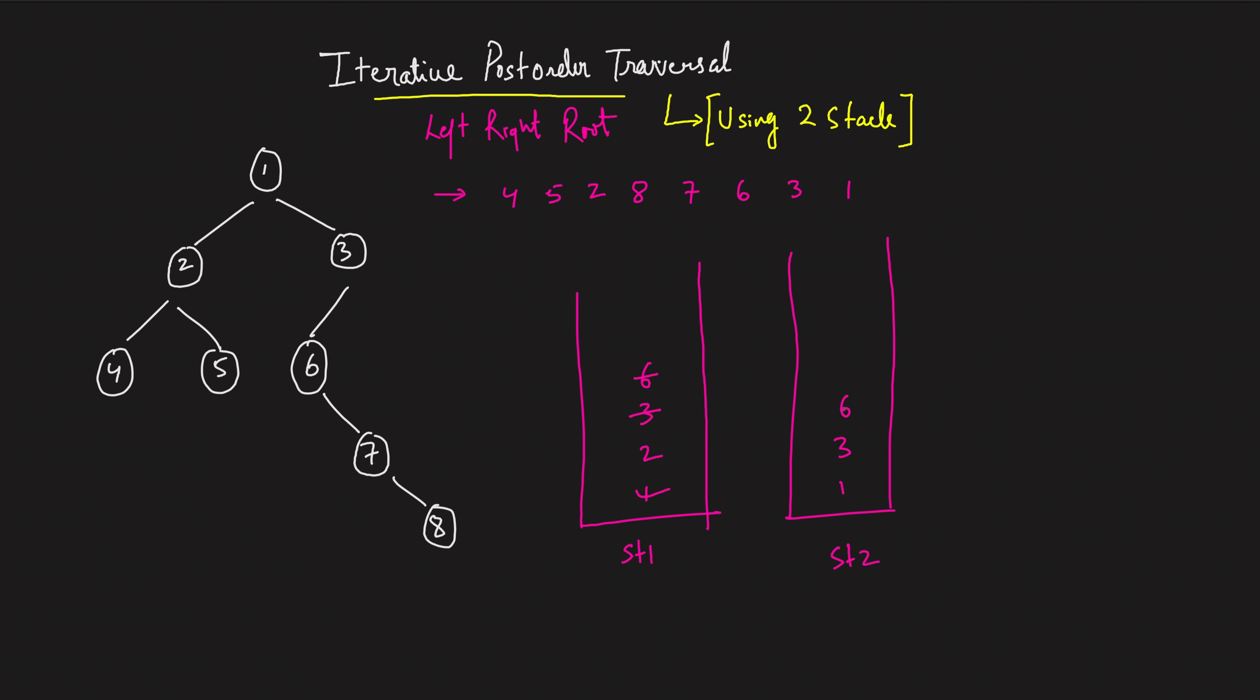Now again, come back on the next iteration, take whatever is at the top, put it onto your stack. So I put that into your other stack. Next, whatever you have taken, if there is a left of six, take it, if there is a right of six, take it and put it into your stack. Perfect. Now what is in the next iteration? When you come across, you get seven. So you'll take seven, you'll put that into your stack two. Once you put that into your stack two, for seven, does there exist a left? No, does there exist a right? Yes. Take it and put that into your stack.